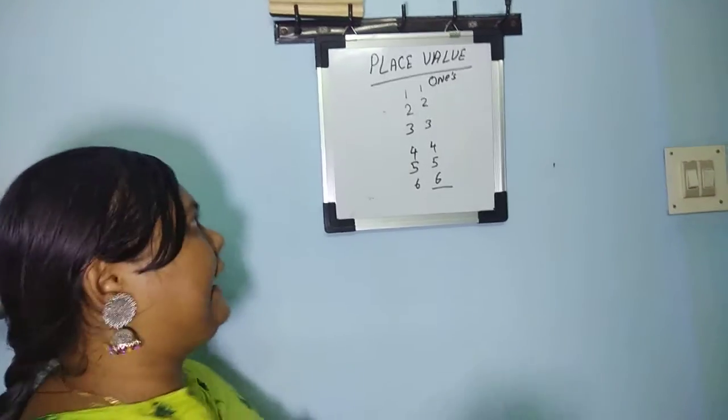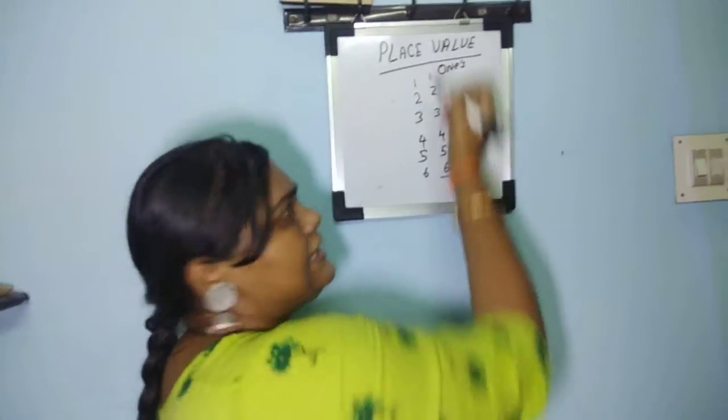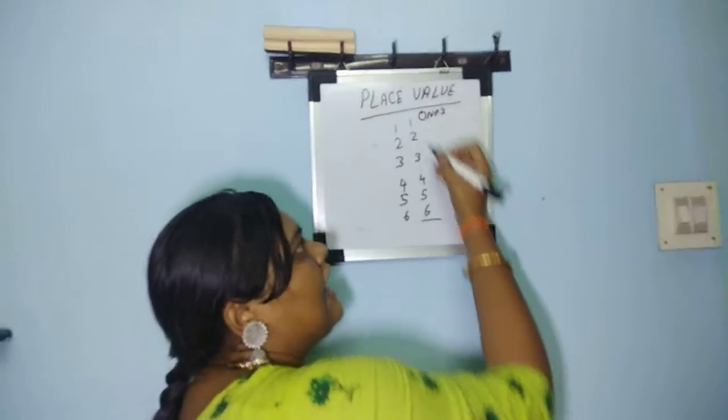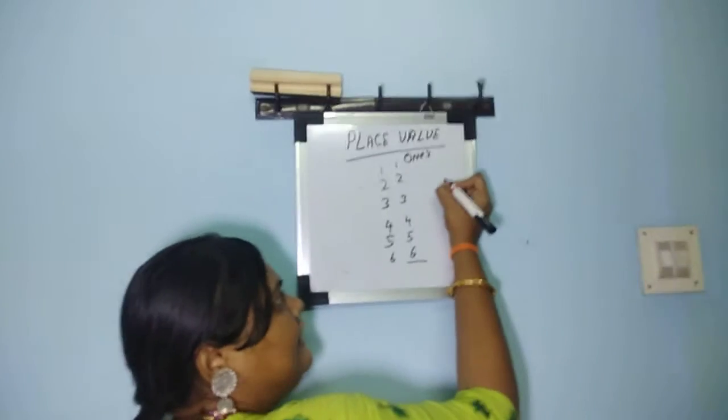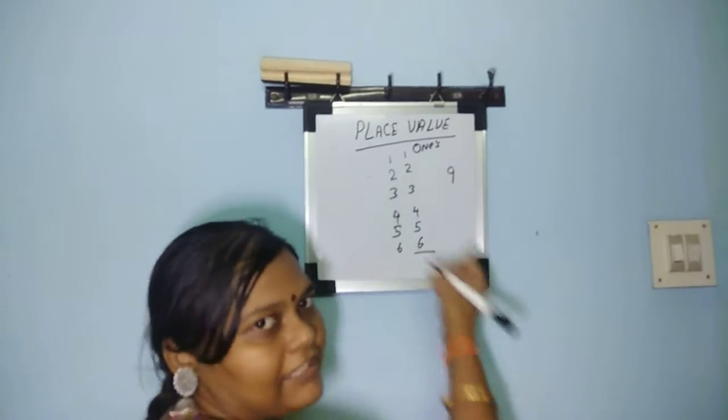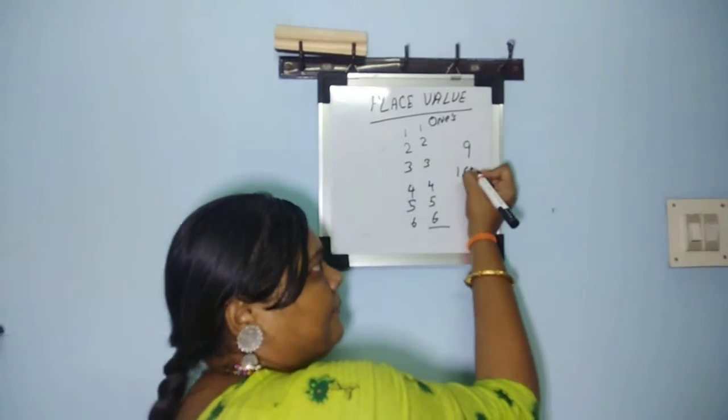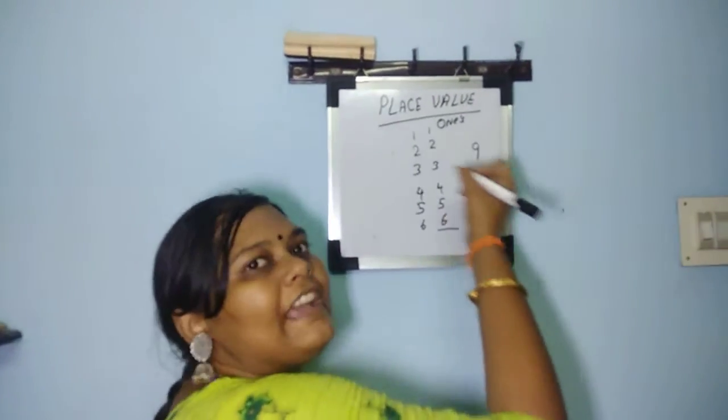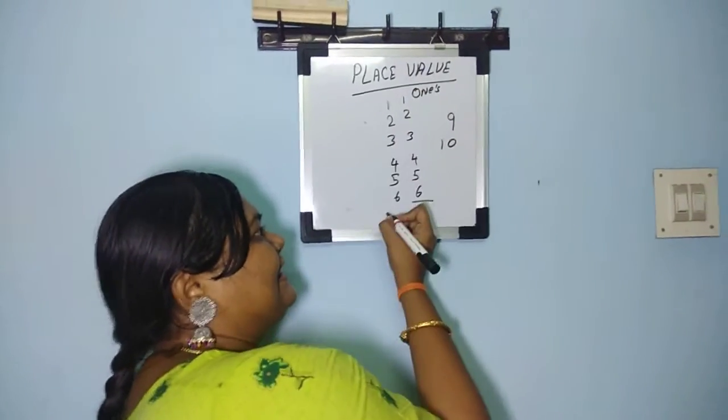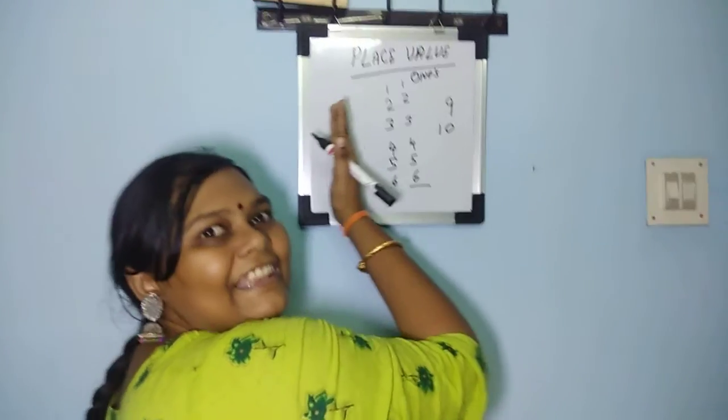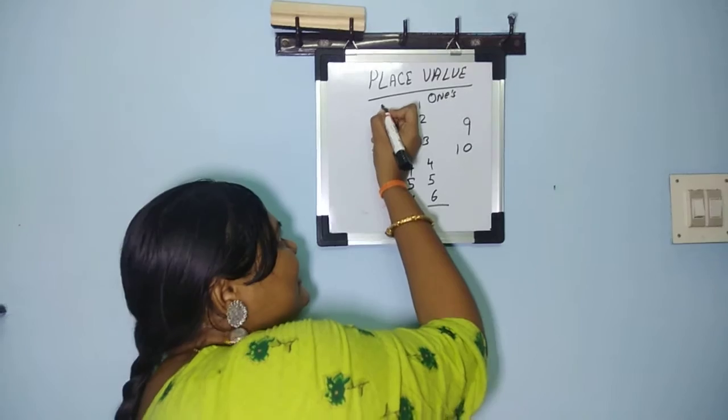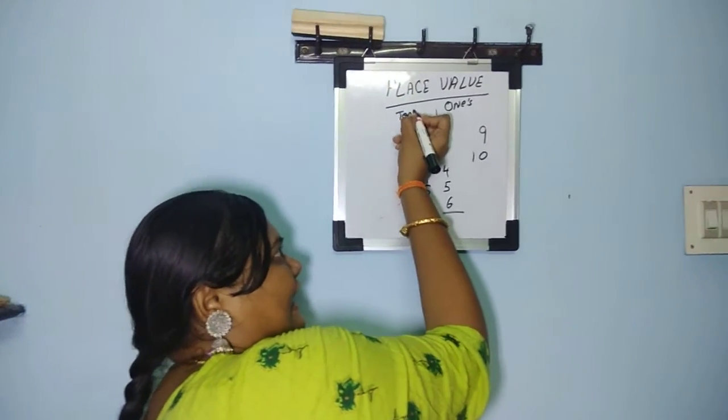But how to make them understand it is tens? You can say that the one digit number, the last number of ones is 9. I mean one digit number is 9. After done, the next number is 10, so it is called as tens. This side, the next one is called as tens.